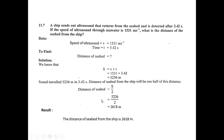To find the depth of the seabed, or its distance from the ship, we divide the total distance by 2. The answer is 2618 meters. Result: the distance of the seabed from the ship is 2618 meters.